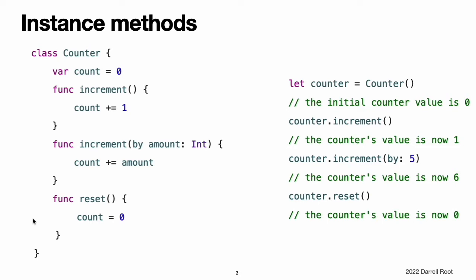It cannot be called in isolation without an existing instance. This is an example that defines a simple counter class, which can be used to count the number of times an action occurs. The counter class defines three instance methods: increment, which increments the counter by one; increment by, which increments the counter by a specified integer amount; and reset, which resets the counter to zero. The counter class also declares a variable property, count, to keep track of the current counter value. You call instance methods with the same dot syntax as properties.